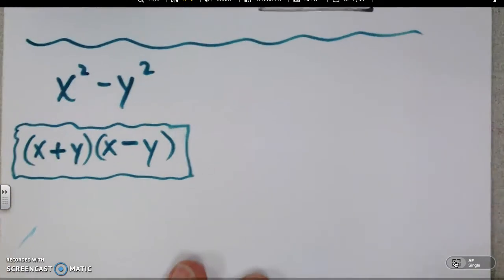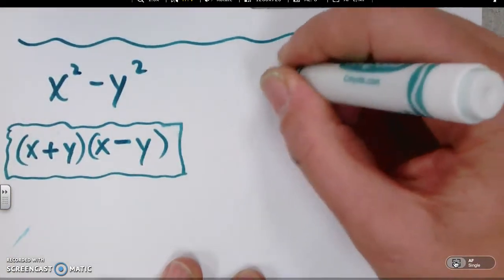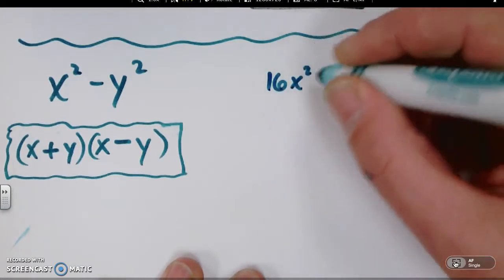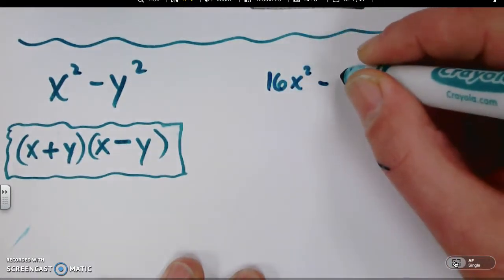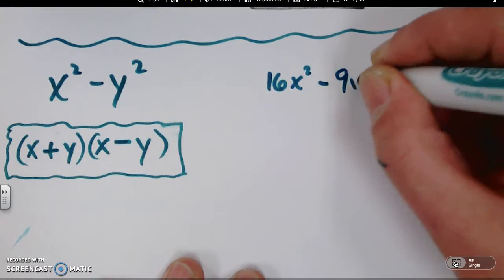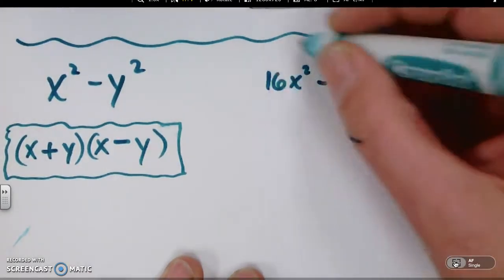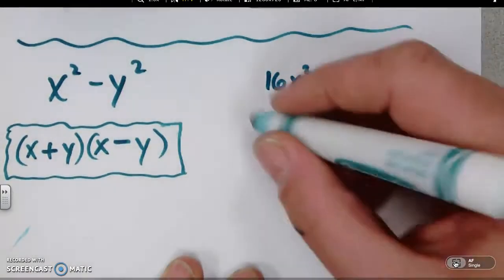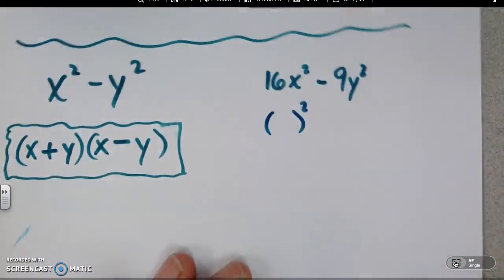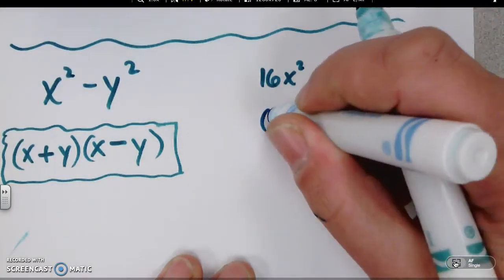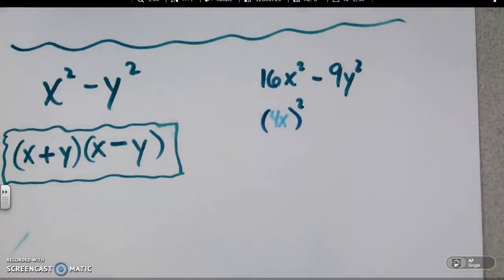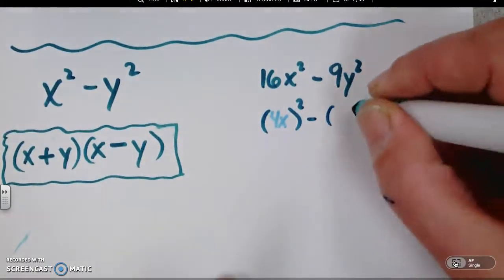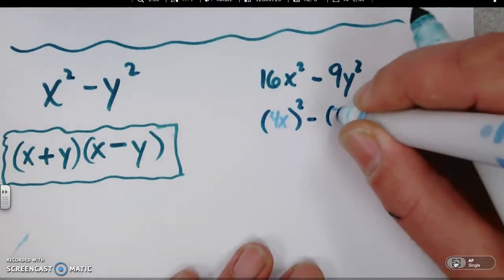Okay. Let's try one more just to really drive this point home. What if they have 16x squared minus 9y squared? What you have to recognize is that this is actually a perfect square. It's very much like this. Just instead of one number, this is the same as having 4x squared.